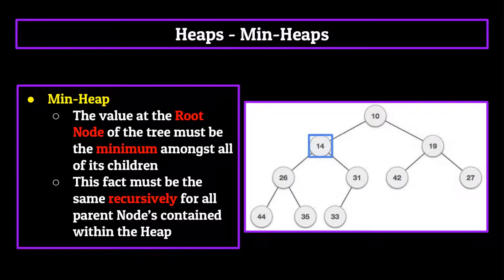Take 14 for example, its value is less than 26, 31, 44, 35 and 33. This is the case for every single subtree in the heap as well.